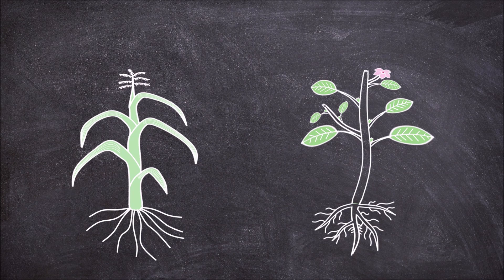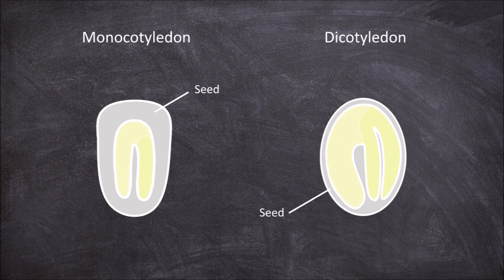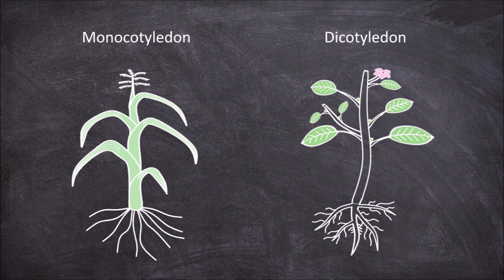Angiosperms, which are the flowering plants, can be divided into two groups: the monocotyledons and the dicotyledons. The key difference that defines the two groups is the number of cotyledons they have. Monocots have a single cotyledon, whereas dicots have two.